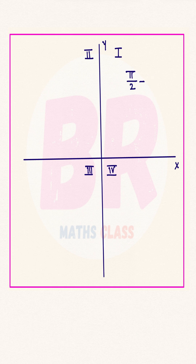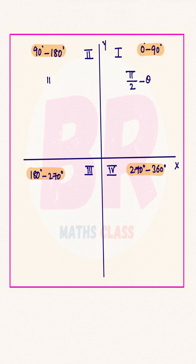Pi by 2 minus theta lies in the first quadrant. Pi by 2 plus theta lies in the second quadrant. Pi minus theta also lies in the second quadrant.